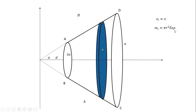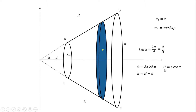Let's say tan alpha. So tan alpha is equal to lambda a into d, and tan alpha is equal to a into H. This is the same as pi r into delta x. D is equal to lambda a into tan alpha, that is lambda a cot alpha. H is equal to a cot alpha. Simple h is equal to H minus d. So r is equal to x tan alpha.